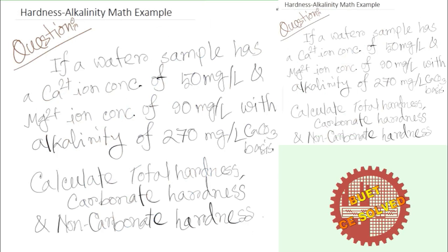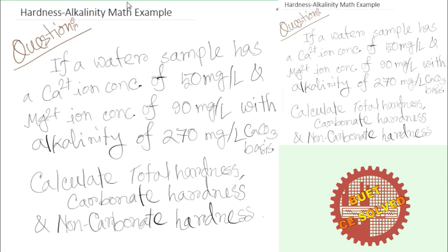Hello everyone. I am going to talk about an alkalinity hardness related math example. If a water sample has a calcium ion concentration of 50 mg/L, magnesium of 90 mg/L, and alkalinity of 270 mg/L as calcium carbonate basis, find the total hardness, carbonate hardness, and non-carbonate hardness.